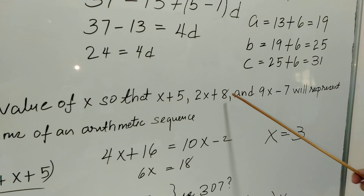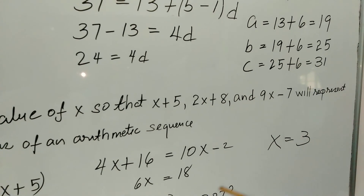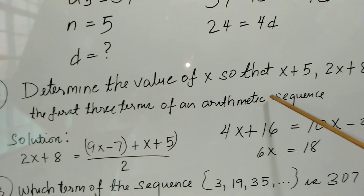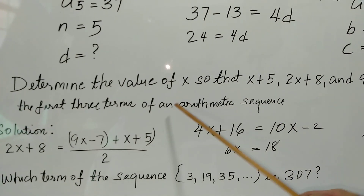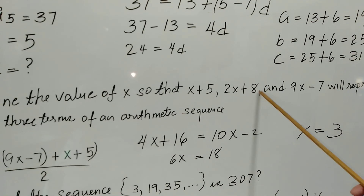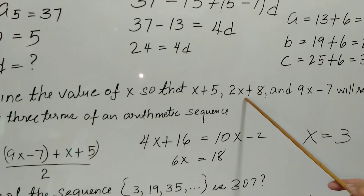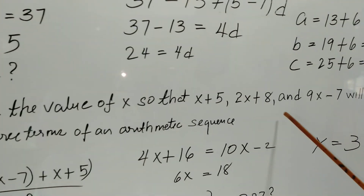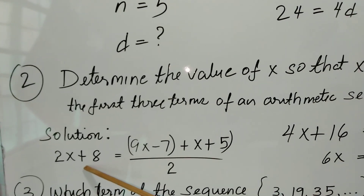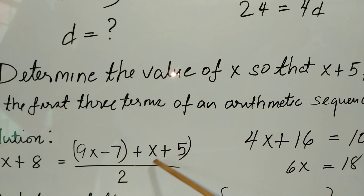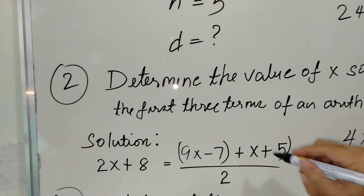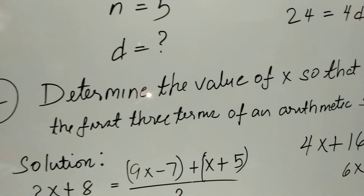For problem number 2: determine the value of x so that x plus 5, 2x plus 8, and 9x minus 7 will represent the first three terms of an arithmetic sequence. Since this is an arithmetic sequence, the middle term 2x plus 8 will equal the sum of x plus 5 and 9x minus 7, divided by 2.